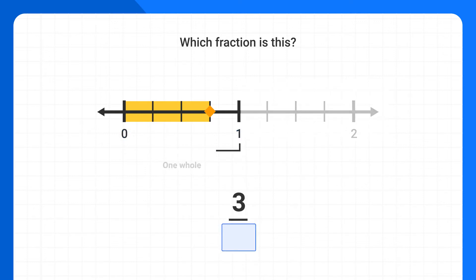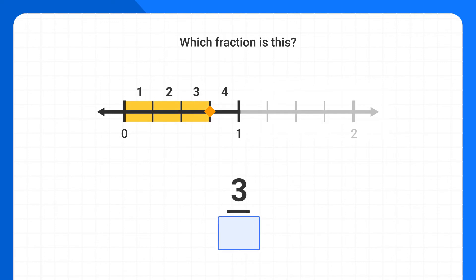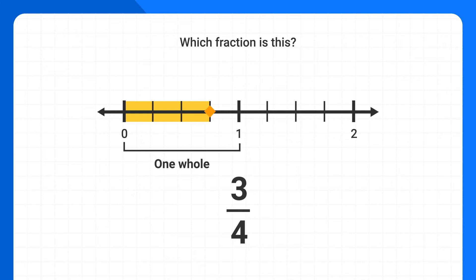I need to figure out how many parts it's split up into. I can see there's a total of one, two, three, four parts in this one whole, so I'll make my denominator four. Make sure you're only counting up the parts in one whole, and not the entire number line. And just like that, I've identified that this fraction represents three-fourths.